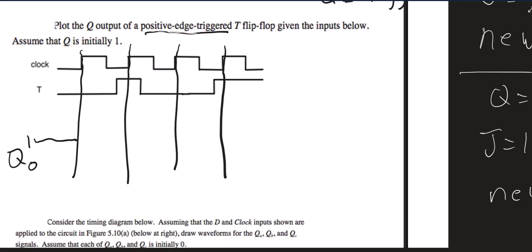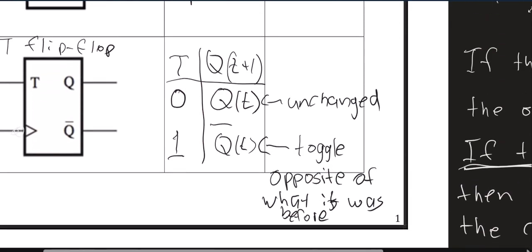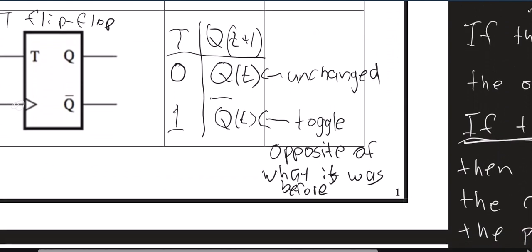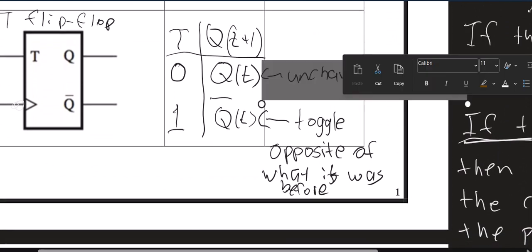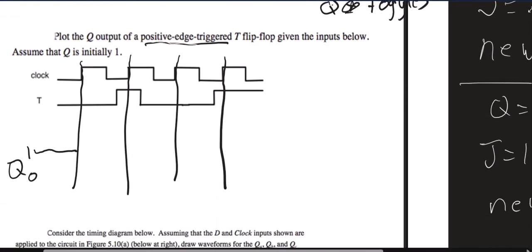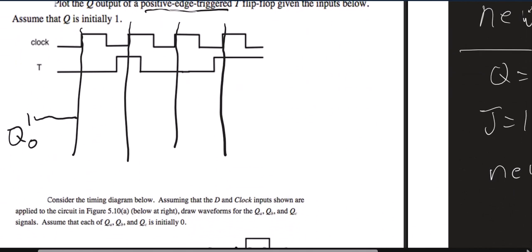We get to the positive edge of the clock, and we see that T is 0. Now for T, when T is 0, there's no change. So T is 0, so there's no change, so Q stays 1.